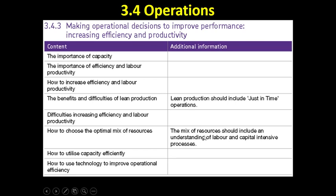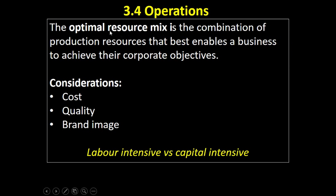The mix of resources should include an understanding of labour and capital intensive processes. The optimal resource mix is the combination of production resources that best enables a business to achieve their corporate objectives. The business has got to decide how much labour, how much capital to employ, and which natural resources to use to achieve those corporate objectives.